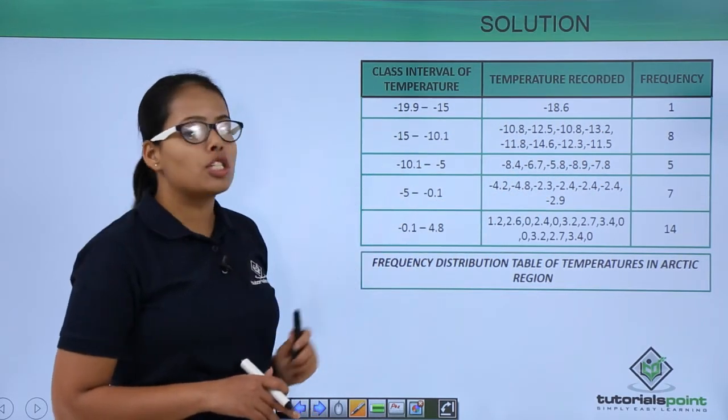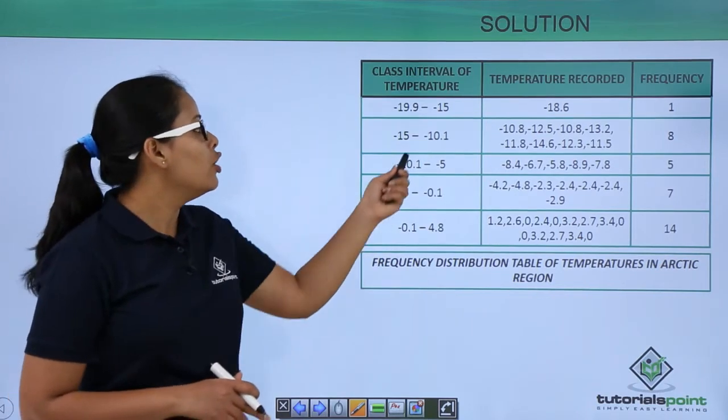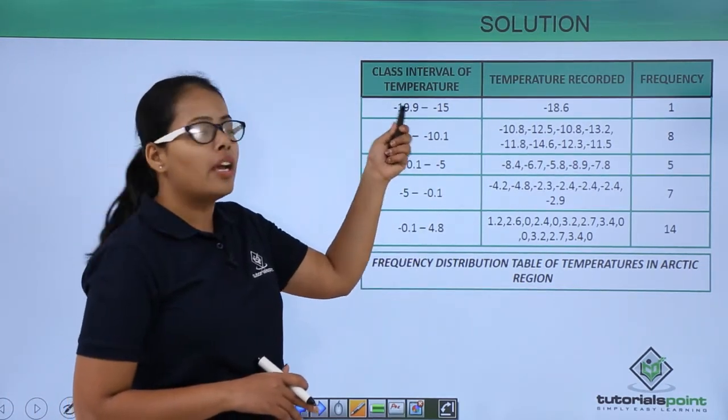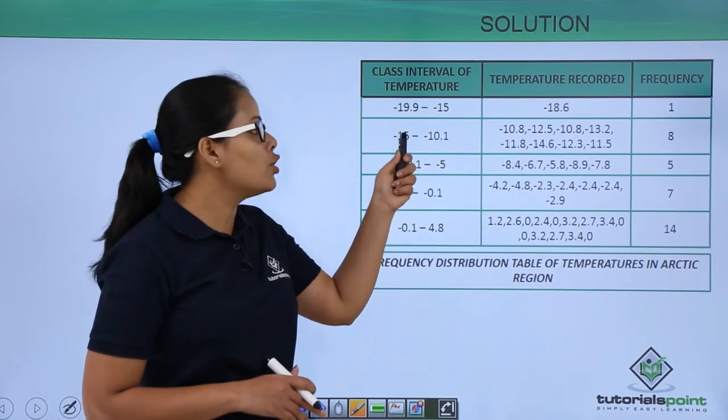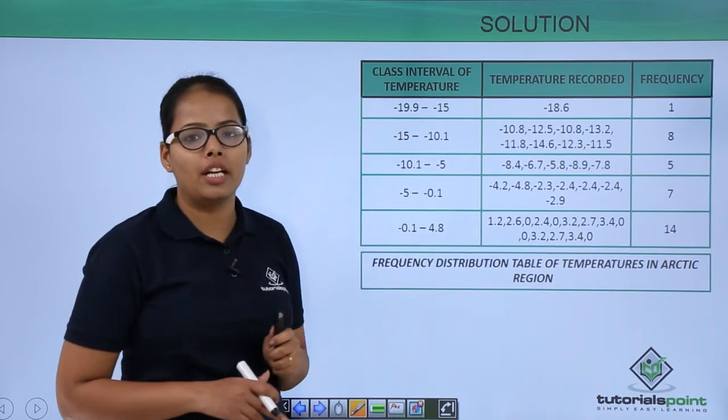For the interval -15 to -10.1, make sure the class size is 4.9, and you need to keep the class size the same for all the other intervals.